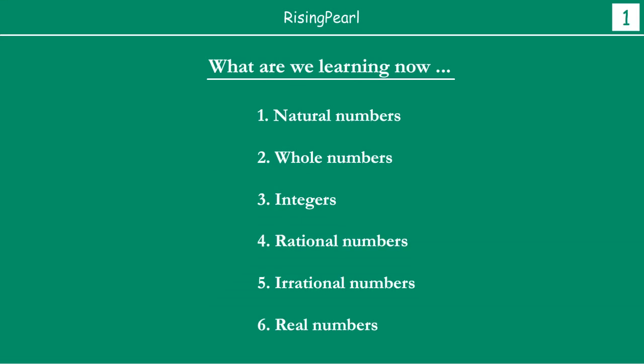Now you would recall that in our last season, in the first series, we had learned a lot about natural numbers, whole numbers, integers, rational numbers, irrational numbers, and real numbers. We actually went through about 47 webisodes. I'm going to provide you the link to all those videos down below. If you need to look them up in detail, please feel free to click the link. For the purposes of this webisode, we are going to just do a quick recap only. So let's take a look at each of these numbers.